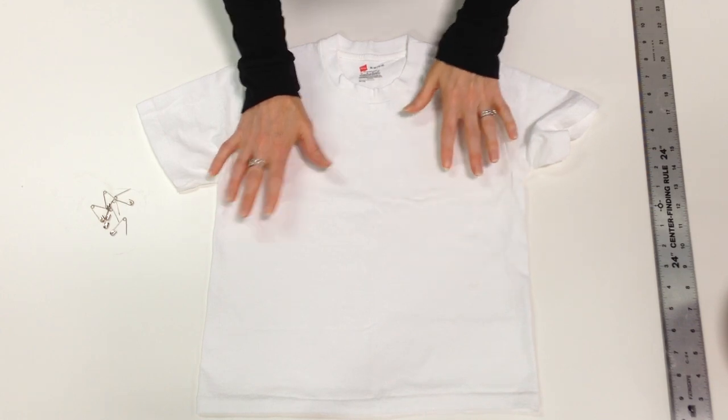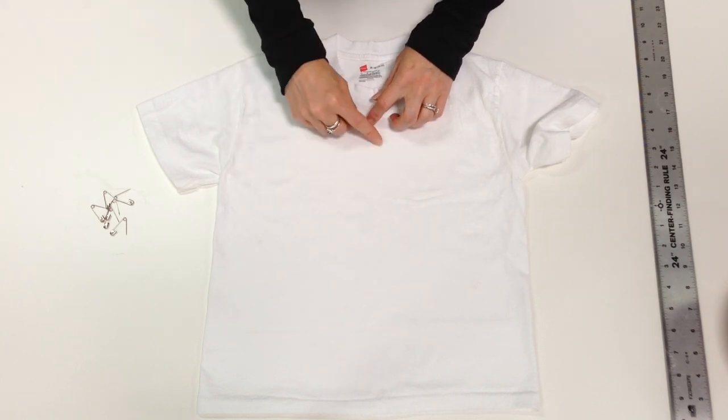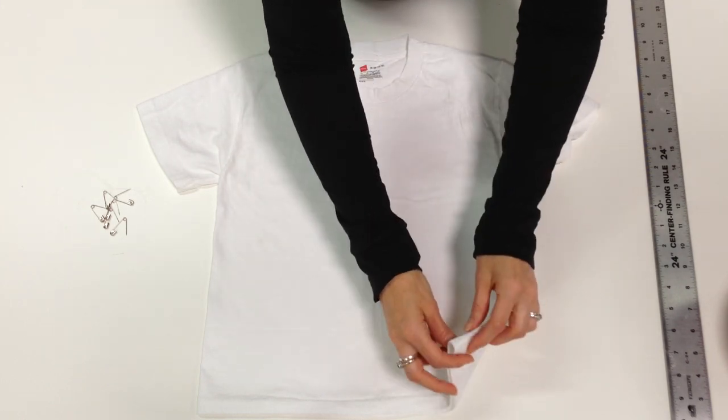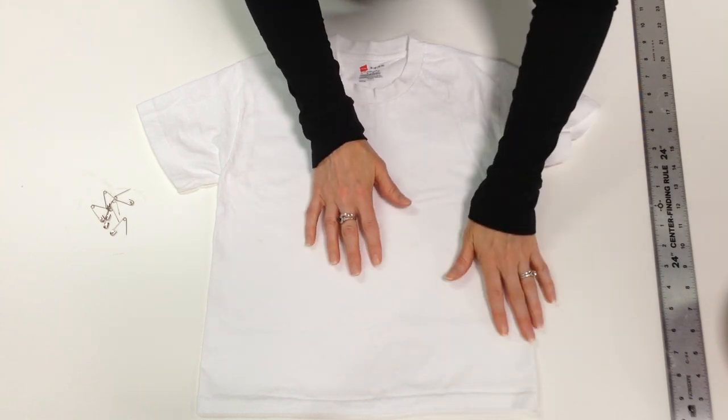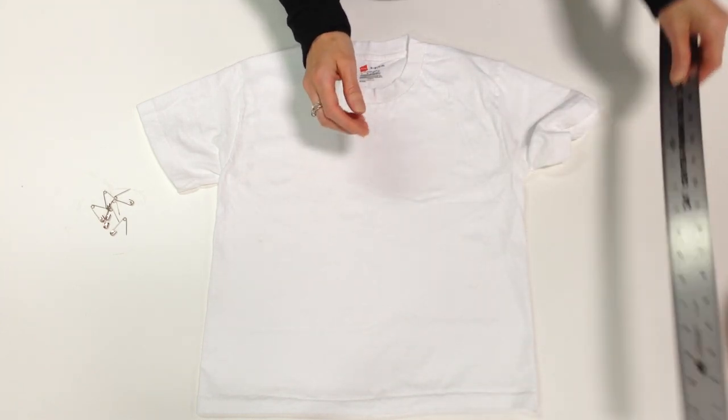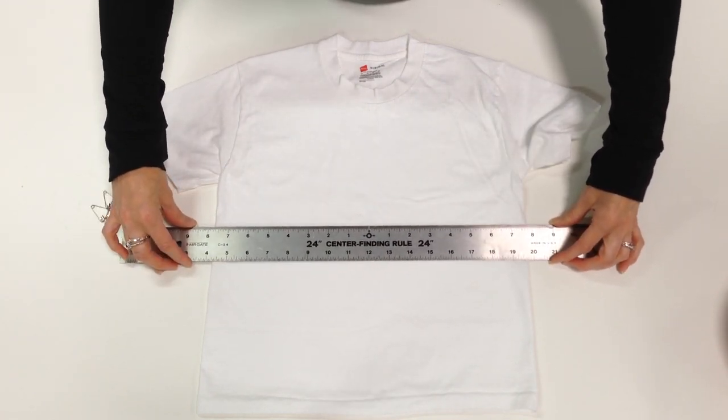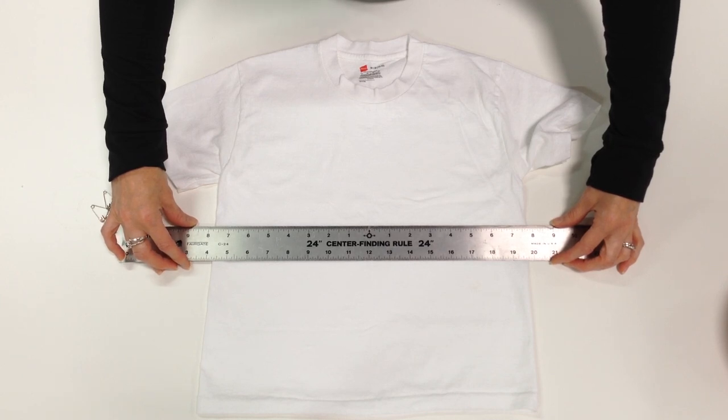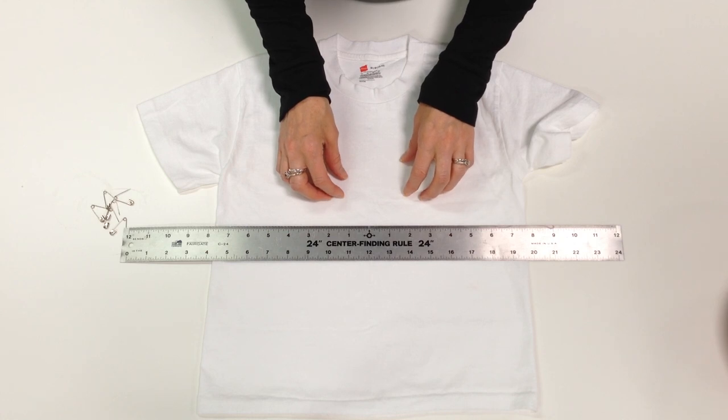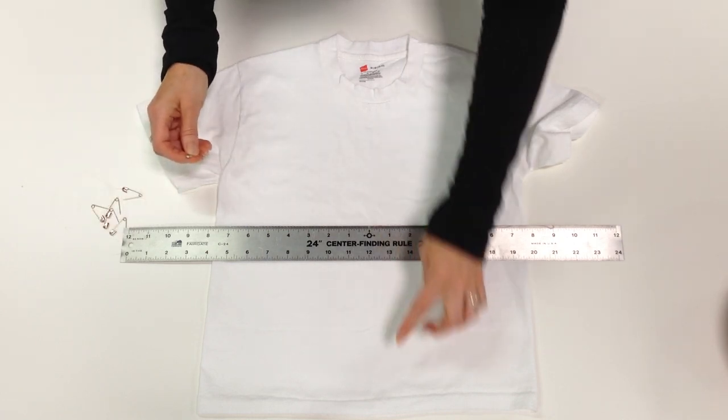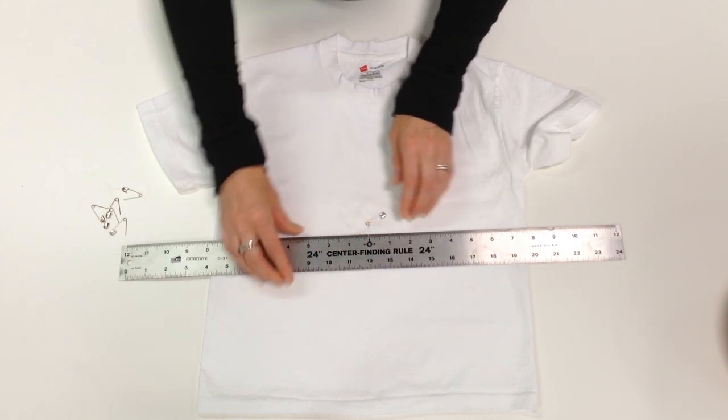I'm going to create my dyed design in the center of this shirt, so I want to find that midline. If the shirt has side seams, you can line those up, but this shirt doesn't. I'm going to use this nifty center finding ruler. If you don't have one of these, you can just use a regular measuring stick. I'm going to mark one point that's about halfway down the shirt and put a safety pin in at the center.